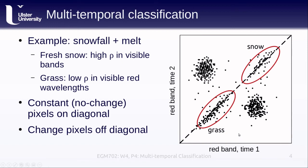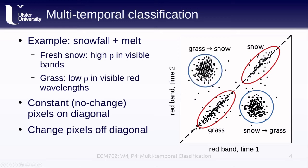For example, pixels with a low red value at time 2 but a high red value at time 1 are pixels that have moved from snow to grass — snow that has melted. And perhaps we also have pixels where snowfall has occurred, so low values at time 1 and high values at time 2, representing grass that has been covered over by snow.